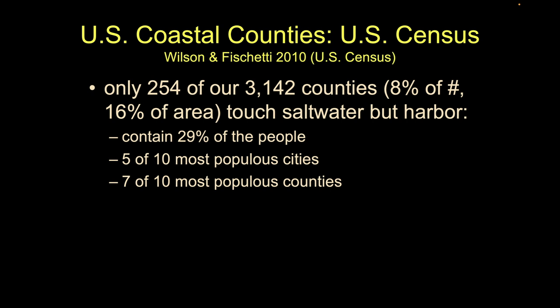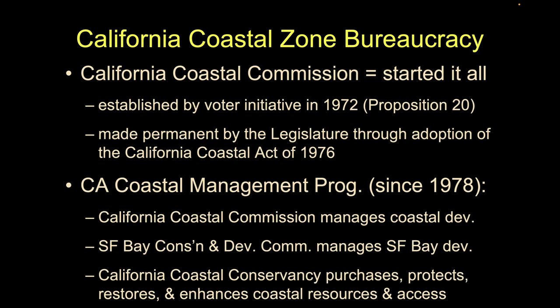Let's talk about a couple of examples of different applications of these definitions. Here is an analysis from the 2010 U.S. Census. These researchers report that only 254 of our more than 3,000 counties touch saltwater. But even though that's only 8% of the total number of counties — and only 16% of the county areas in the U.S. — they have about 29% of the people, and they have half of our most populous cities and 70% of our most populous counties.